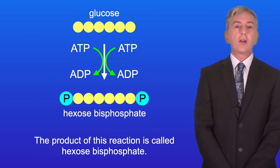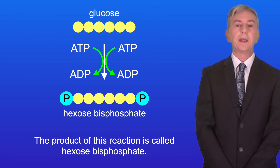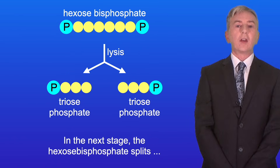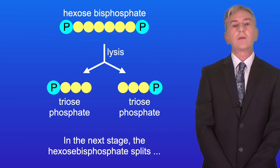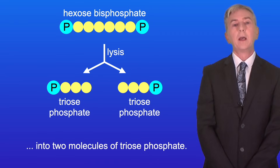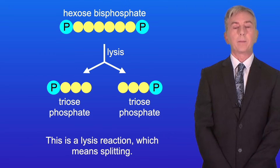The product of this reaction is called hexose bisphosphate. In the next stage, the hexose bisphosphate splits into two molecules of triose phosphate. This is a lysis reaction, which means splitting.